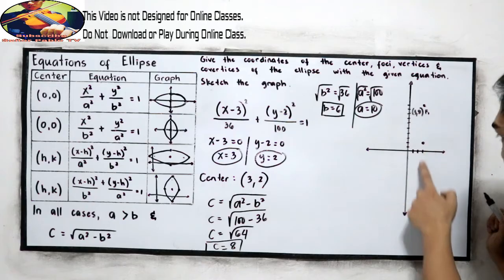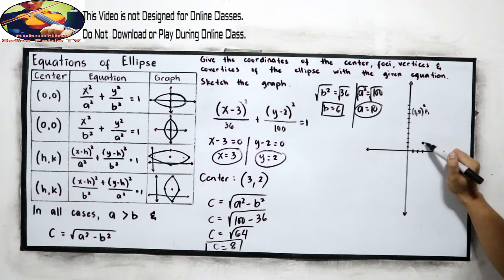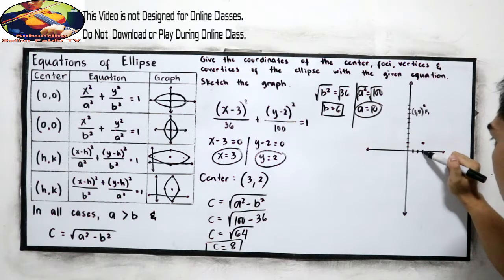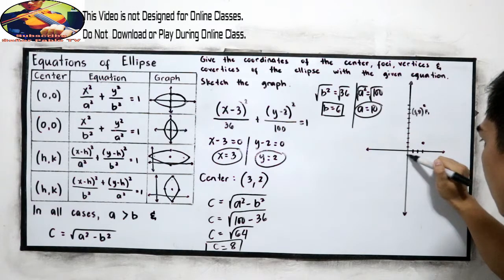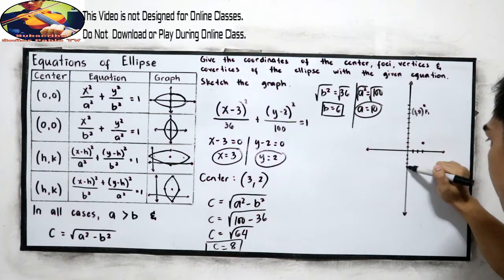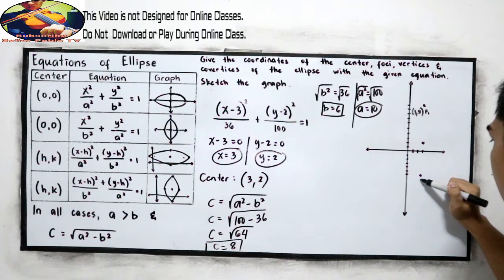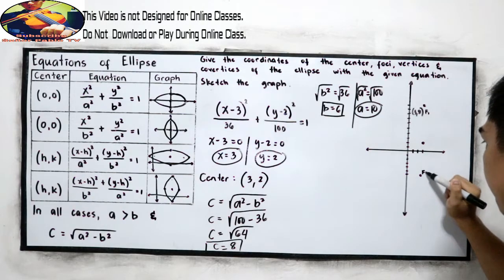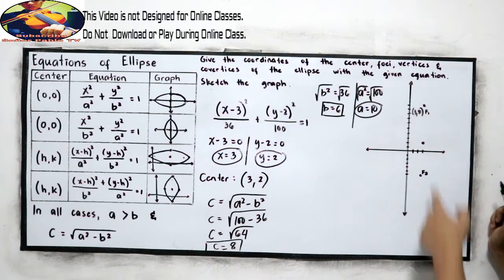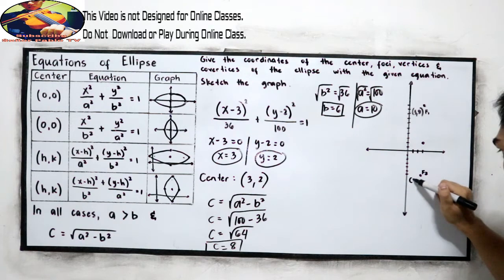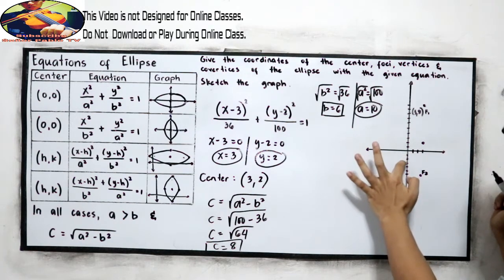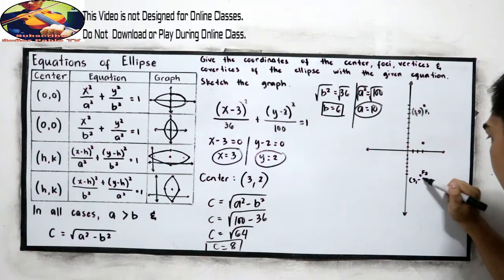And for our F sub 2, 8 units going down from the center. So this is our F sub 2. Its coordinate is (3, negative 6).